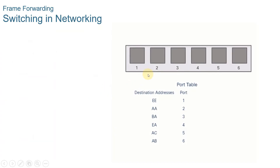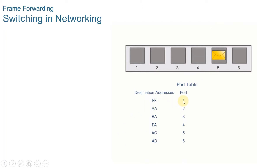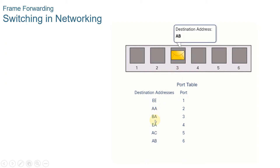For instance, in this animation, we have a frame destined for EA. From the MAC address table, EA is connected to port 4, so it will be sent out on port 4. Likewise, if we have a frame destined for EE, it will be forwarded on port 1 as shown on this MAC address table. And if we have a frame destined for AB, that would be forwarded out port 6.